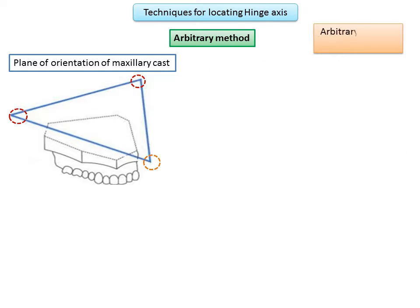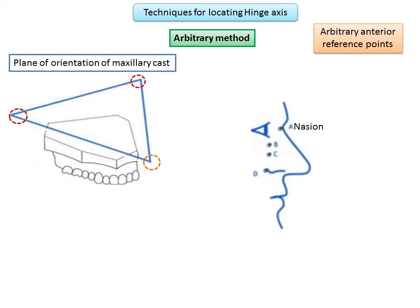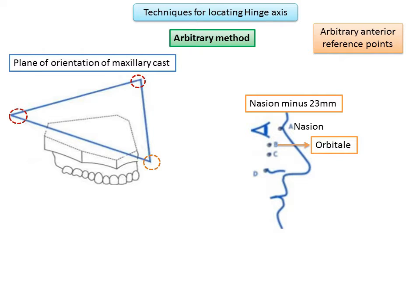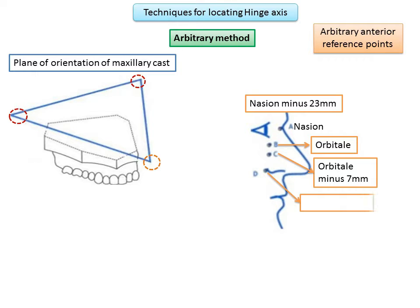The most commonly used anterior reference point is nasion, used with the Quick Mount facebow — that is, the Whip Mix facebow. Some facebows also use nasion minus 23 millimeters. The Hanau facebow uses orbitale, located with the help of an orbital pointer. A similar point, orbitale minus 7 millimeters, represents the Frankfurt plane, while the ala of the nose corresponds to Camper's plane.